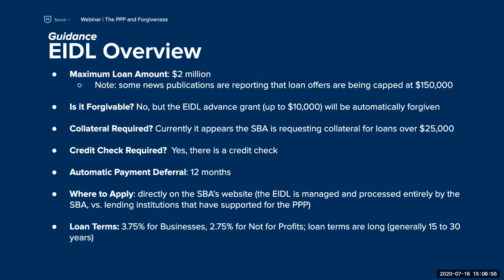There might be a misperception that the EIDL is specifically around COVID, but it was actually a program in place prior to COVID, made widely available in all 50 states as a reaction to the pandemic. The EIDL was a program meant to be in perpetuity — anytime there was a disaster in a region, this loan would be available to affected businesses. The maximum loan amount for the program itself is $2 million. However, with this round of pandemic funding, loan offers were capped at $150,000 to make it more widely available. It's not a forgivable loan — that's the PPP.